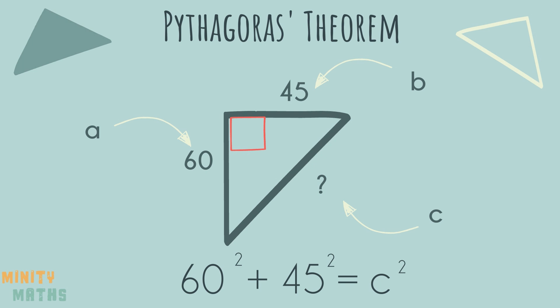Use a calculator, or pen and paper, to square the numbers. Now add these numbers together. 5625 is equal to the square of side c.